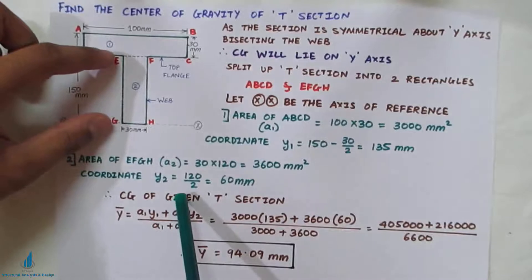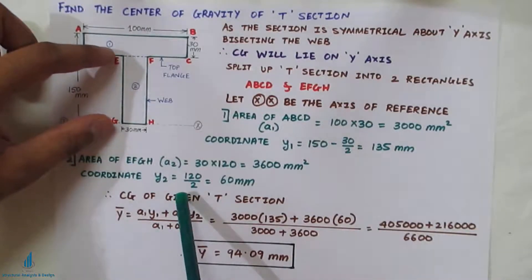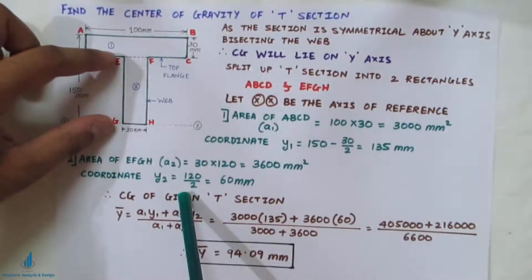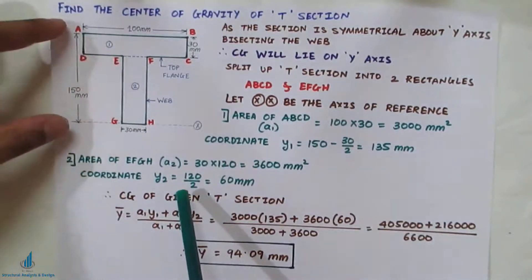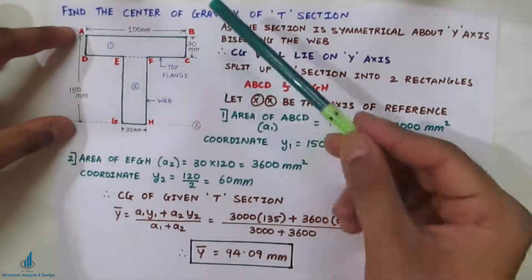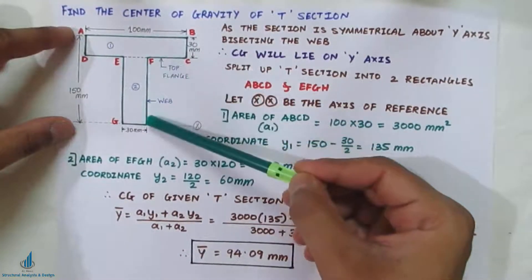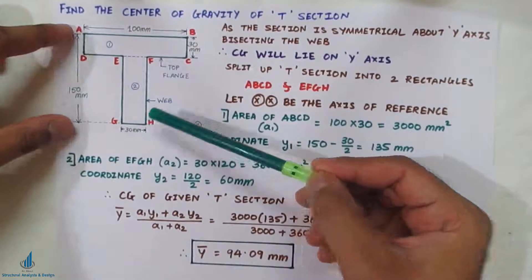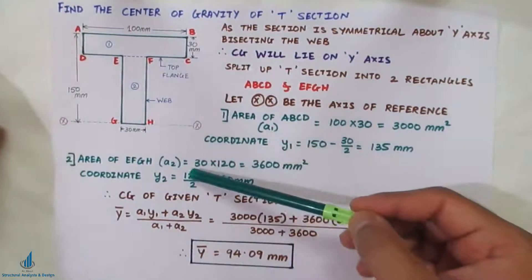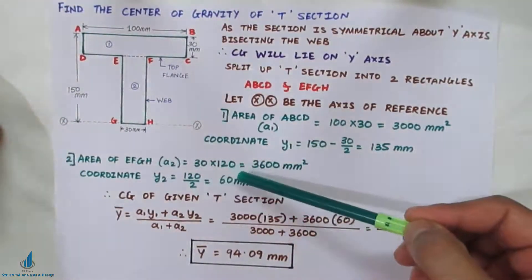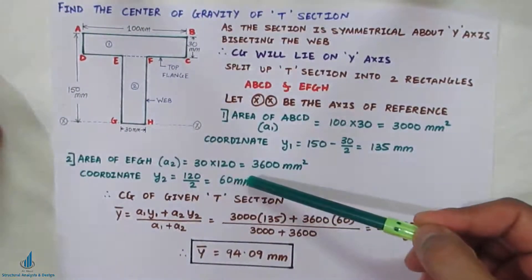The depth of web EFGH is 120 mm — that is, 150 minus 30. So the depth of this web is 120 mm. Therefore, 120 divided by 2 gives Y₂ = 60 mm.